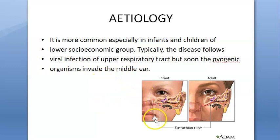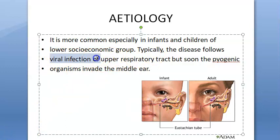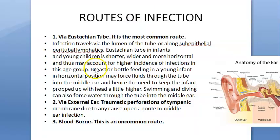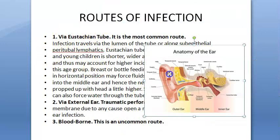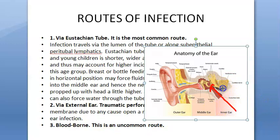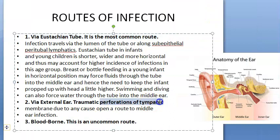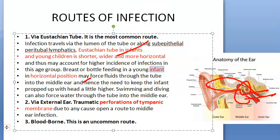This condition is mainly seen in infants and children because of their Eustachian tube anatomy. These children can get a viral infection first, which can then lead to secondary bacterial infection. Bacteria can reach the middle ear via the Eustachian tube — in children the tube is shorter, wider, and more horizontal, allowing bacteria to reach the middle ear more easily.